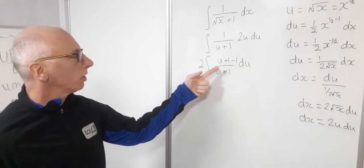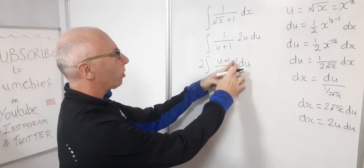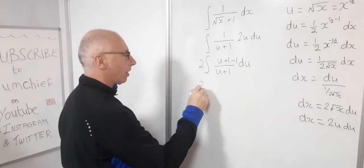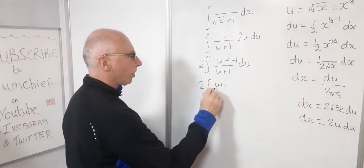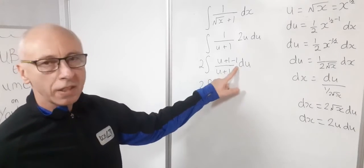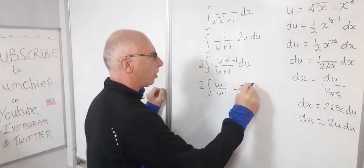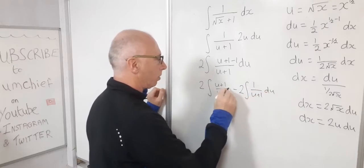So now we can see what we've done here. We can now split this integrand apart. We've got the u plus one over u plus one, and then we've got minus one over u plus one. So let's do that. So now we've got two times the integral of u plus one over u plus one, and then we can subtract this, break this integral apart again. So another integral one over u plus one. And these are all du's.